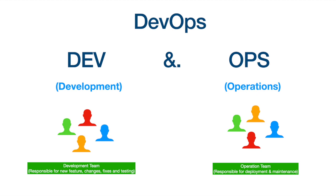The development team was responsible for developing new features, changing existing features, fixing bugs, and testing. On the other hand, the operations team was responsible for the deployment and maintenance of software and making sure that the software remained stable.